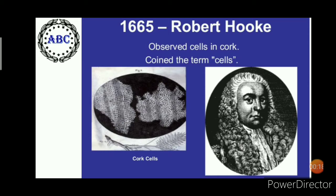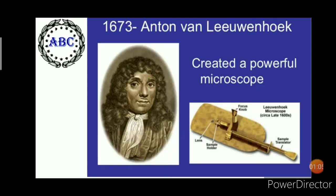In biology, cell theory is the historic scientific theory and now it is universally accepted. The cell was first discovered by Robert Hooke in 1665, which can be found described in his book Micrographia. Hooke discovered a multitude of tiny pores that he named cells. This came from the Latin word cella meaning a small room like monks lived in, and also cellulia which means the six-sided cell of a honeycomb.